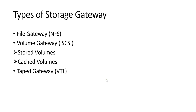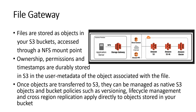Looking at file gateway in more detail: it stores flat files as objects in your S3 buckets, accessed through an NFS mount point. Ownership, permissions, and timestamps are durably stored in S3 in the user metadata of the object associated with the file. Once objects are transferred to S3, they can be managed as native S3 objects, and bucket policies such as versioning, lifecycle management, and cross-region replication apply directly.